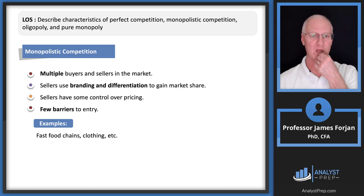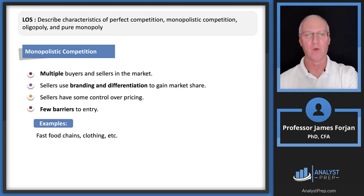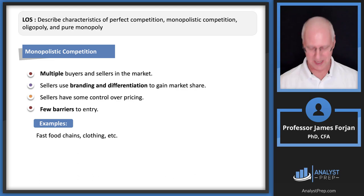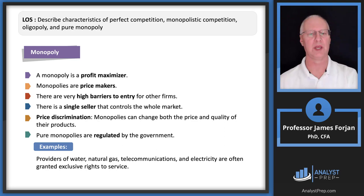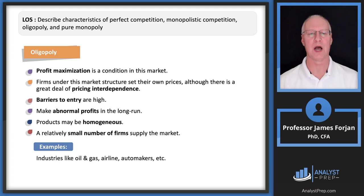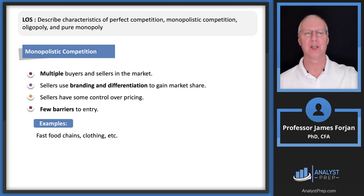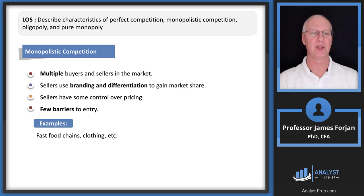Monopolistic competition is a completely different level — lots and lots of producers, like 20 or 30. Examples include fast food chains or clothing. There are multiple buyers, and the key thing about the MC structure is that branding and differentiation is essential to gain market share, which leads to profit maximization. There's some control over pricing because of branding.